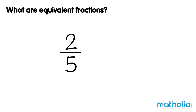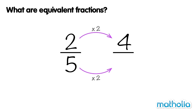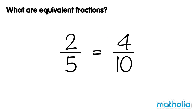Let's find an equivalent fraction of two fifths. We will multiply the numerator and the denominator by two. Two times two equals four. Five times two equals ten. Two fifths is equal to four tenths. They are equivalent fractions.